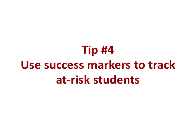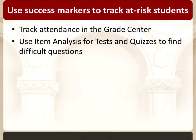Tip number four is using success markers to track students who might be at risk based on what their performance is in the course. One of the biggest success markers for being successful in a course and for retention in general is that students are actually attending. You may take attendance in class or not. If you do, you can track that in the Grade Center. You have two options: create a column for every class session and mark who's attended, or create a single column that adds text to type in the dates students were absent.